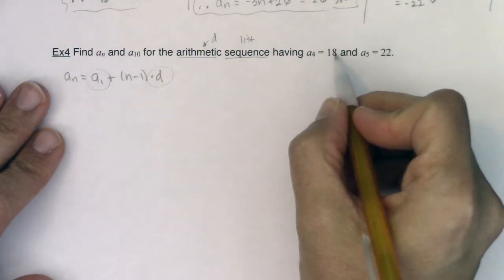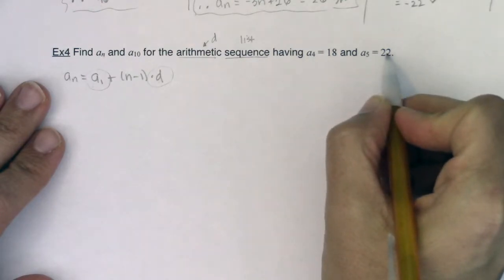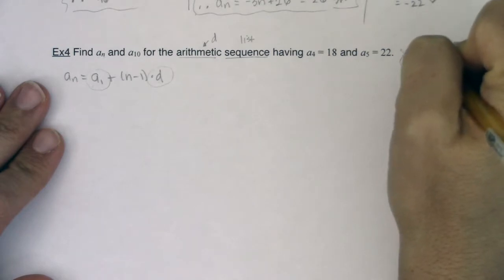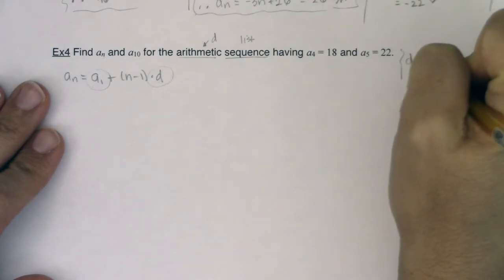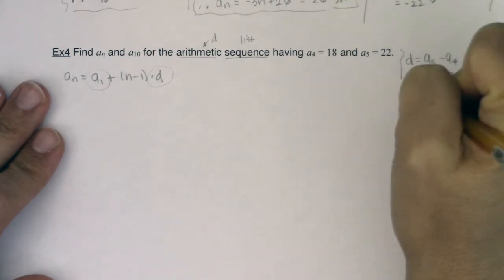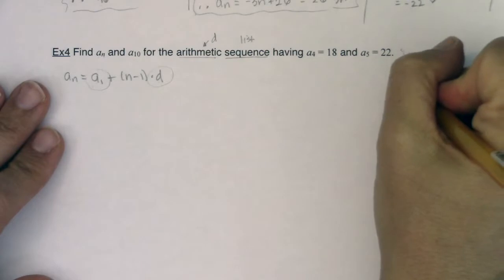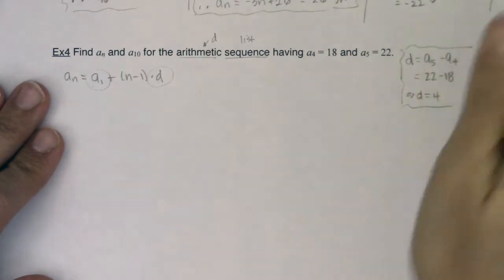So all I know at this point is I know a_4 is 18 and a_5 is 22. Well, I can do d. It's got to be equal to a_5 minus a_4, or in this case that is 22 minus 18. So I see that d has to be equal to 4. I'll keep that tucked away. That's something I'm going to want to use later. So d is equal to 4. I have that pretty crucial piece of information, but what I don't have is a_1.